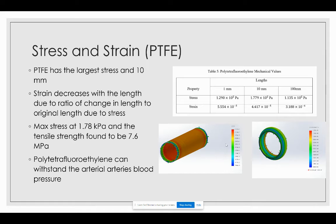For PTFE, the stress and strain diagrams show the largest stress occurs at 10 millimeters, and strain decreases as length increases. This is because strain is the change in length divided by original length — as length increases, the denominator grows, resulting in a smaller strain value. The maximum stress found was 1.78 kilopascals, while the tensile strength from research is 7.6 megapascals. Since the max stress does not overcome the tensile strength, PTFE will be able to withstand the radial artery's blood pressure.